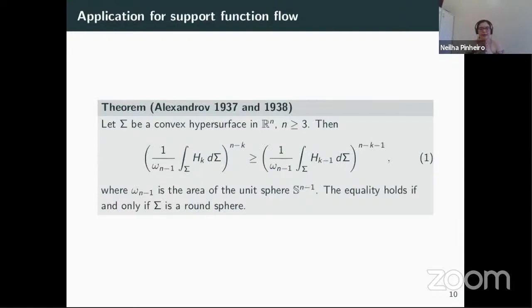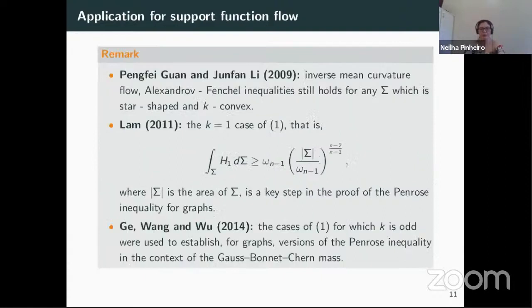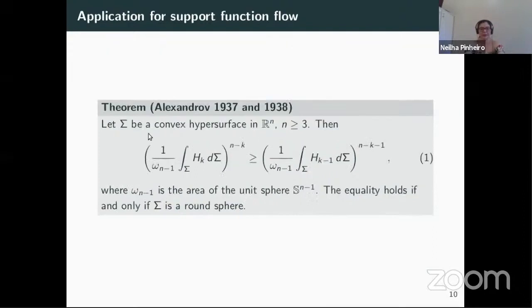Alexandrov proved that if sigma is a convex hypersurface in Euclidean space, then the integrals of k-curvature and (k minus 1)-curvature are related by an inequality involving omega_{n-1}, the area of the unit sphere. The equality holds if and only if sigma is a round sphere. In 2009, Wu and Li used the inverse mean curvature flow to prove the Alexandrov-Fenchel inequality in the star-shaped and k-convex case, changing the convex hypothesis to star-shaped and k-convex, proving this inequality in that setting.